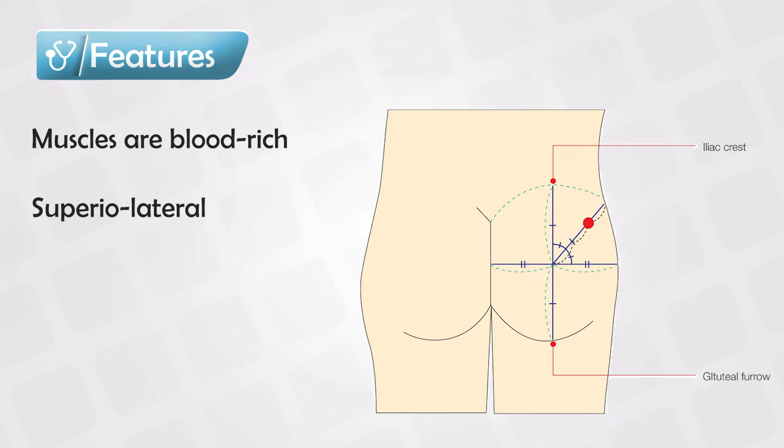Another way is to draw a line between the posterior iliac spine into the great trochanter. Injecting above this line is very safe.